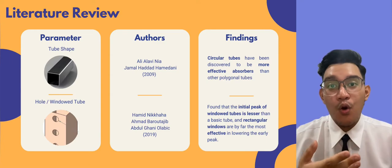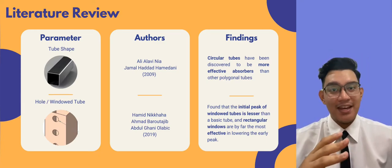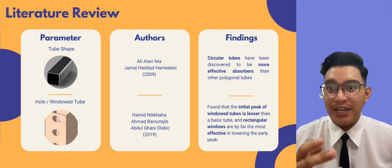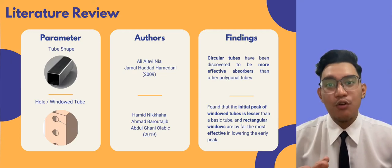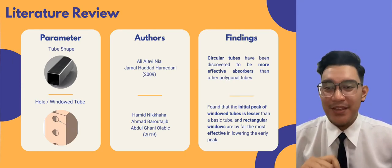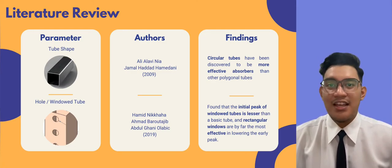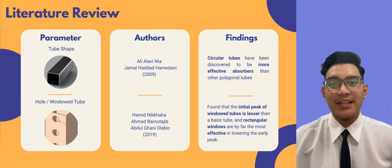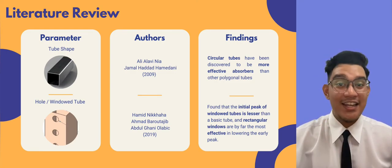The last parameter considered is the hole or window on the tube. This method was used by Hamid et al., and the result showed that the initial peak of the window tube is lesser than the basic tube, and rectangular windows are by far the most effective in lowering the initial peak load. From these studies, the parameter for this research has been set to use rectangular and circular window patterns on a circular type tube due to its performance in handling the crash.